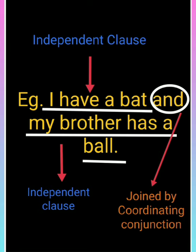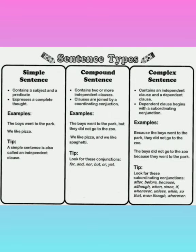Example: 'I have a bat and my brother has a ball.' Mere paas ek bat hai aur mere bhai ke paas ek ball hai. 'I have a bat' — yeh ek poora apne aap mein vakya hai; 'my brother has a ball' — yeh bhi ek independent sentence hai. Lekin yeh dono vakya 'and' co-ordinating conjunction se joined hain. Aise vakyon ko hum compound sentence kehte hain.